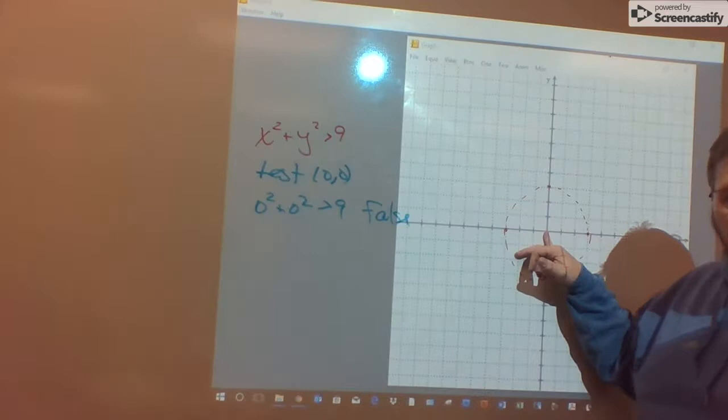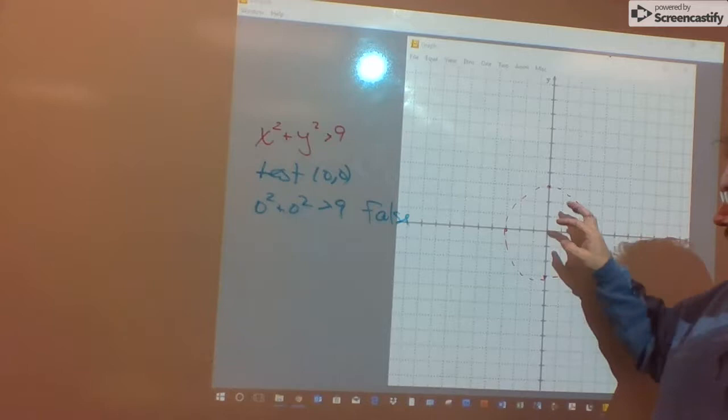Here my test point was inside the circle, but it failed. That means all the points inside the circle will fail, yet all the points outside will not fail.